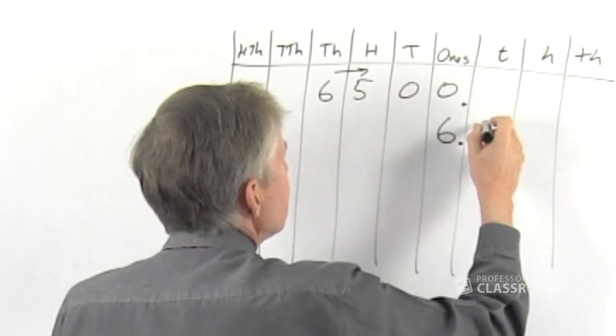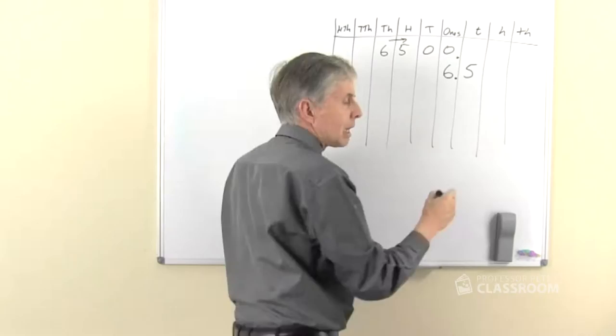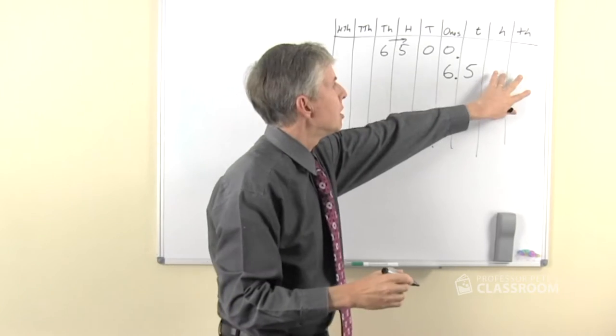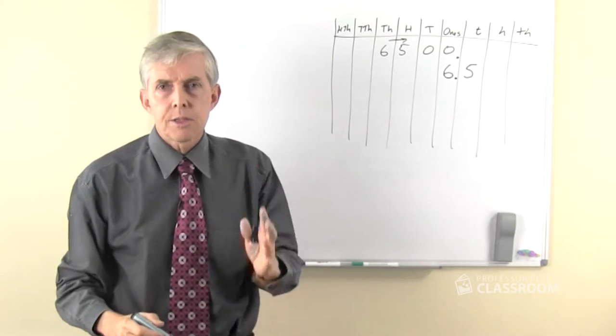Put the decimal point, the five will move three places as well, it'll end up in the tenths column. We could write the two zeros but we don't need to, there's our answer.